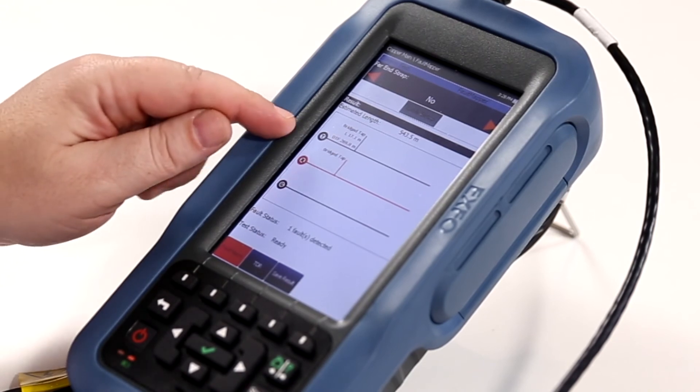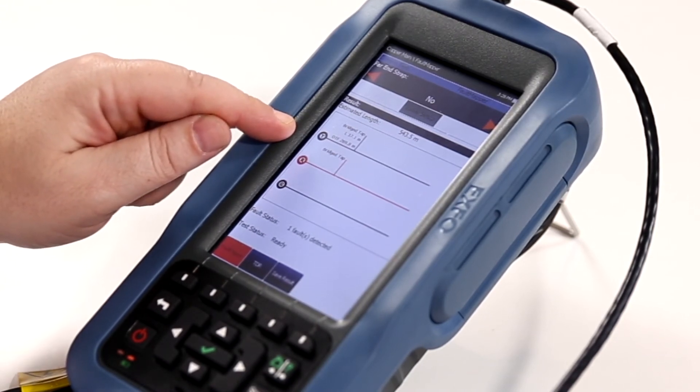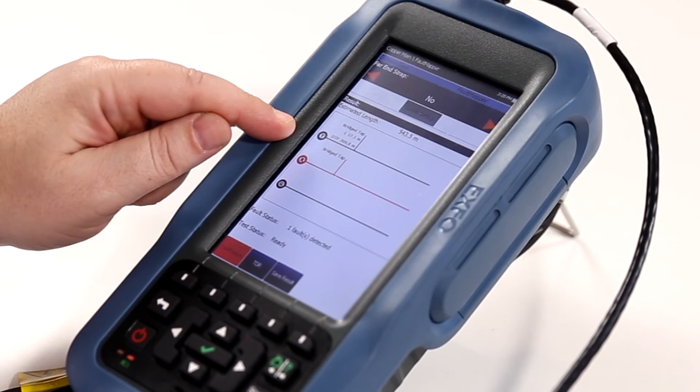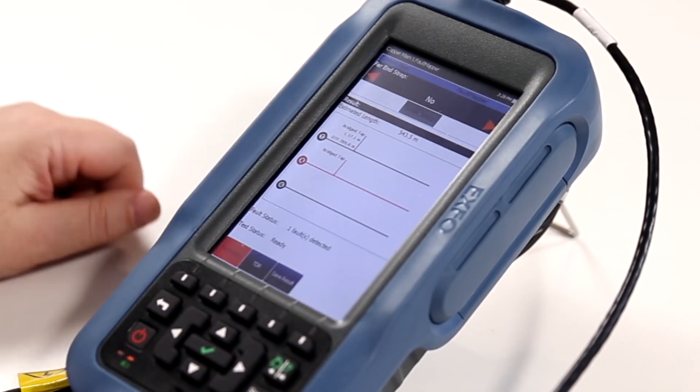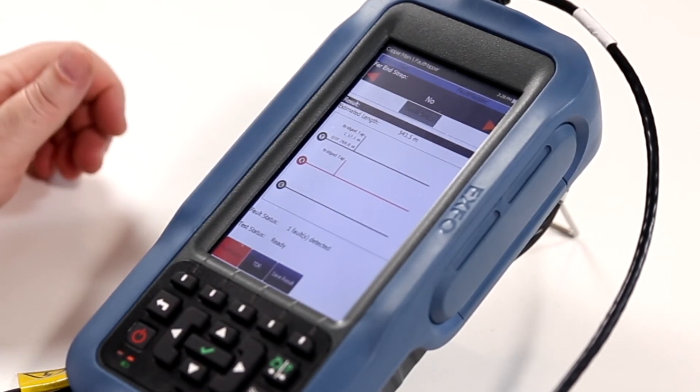You can clearly see here, when the Fault Mapper has completed, it's identified that yes, you have a bridge tap on the line. This bridge tap is approximately 300 meters away from the unit.